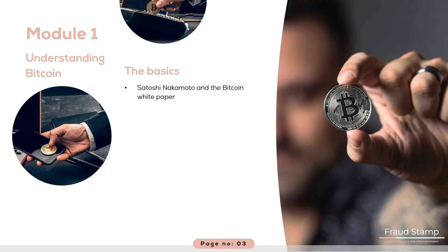The smallest unit of a Bitcoin is called a Satoshi. It is 100 millionth of a Bitcoin. This enables microtransactions that traditional electronic money cannot perform. Bitcoin was the first example of what we call cryptocurrencies today, a growing asset class that shares some characteristics with traditional currencies except they are purely digital, and creation and ownership verification is based on cryptography.